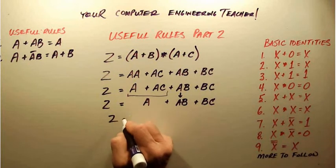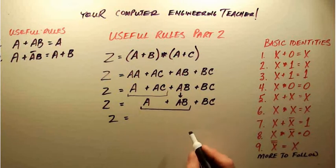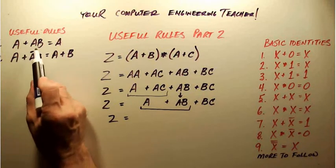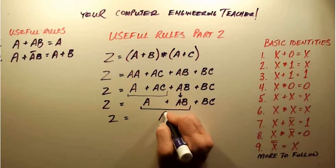Next step, I'm going to look at the first two terms and again I look at those two and I say that looks a lot like useful rule number one as well. A plus AB is equal to A. A plus AB, that's equal to A.